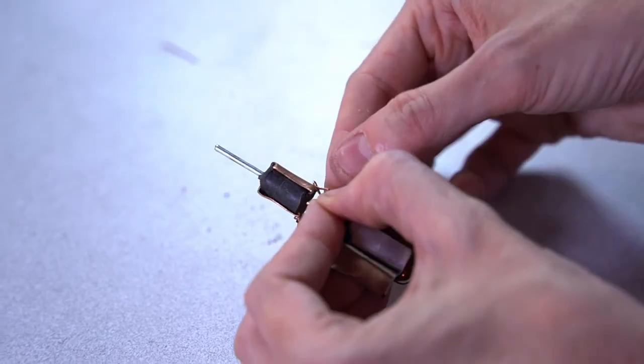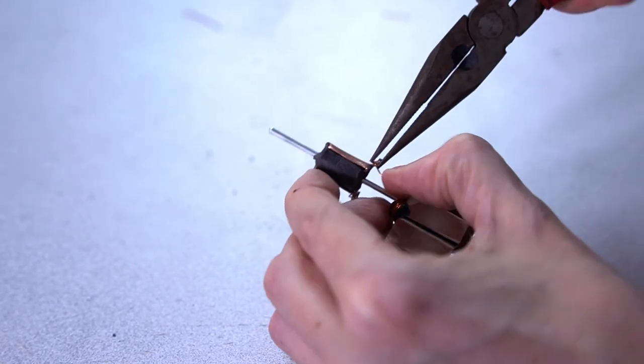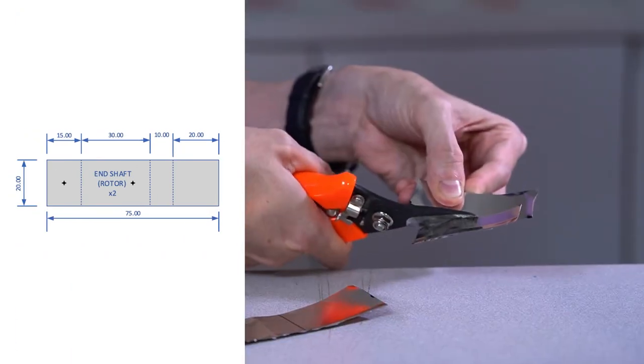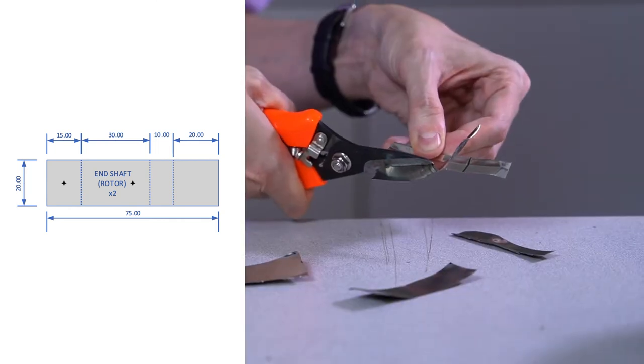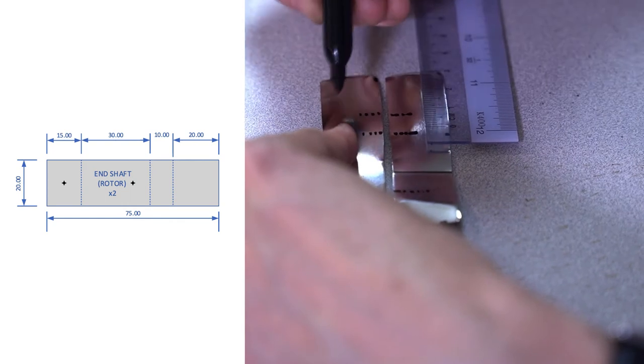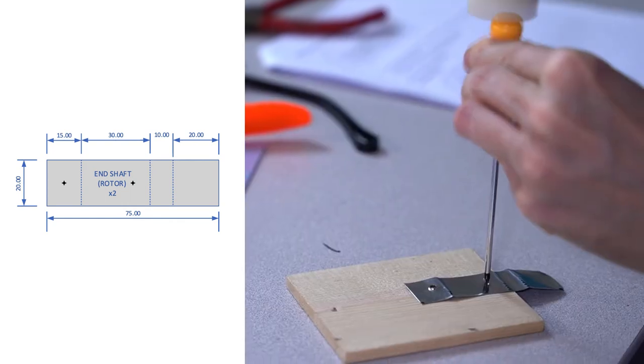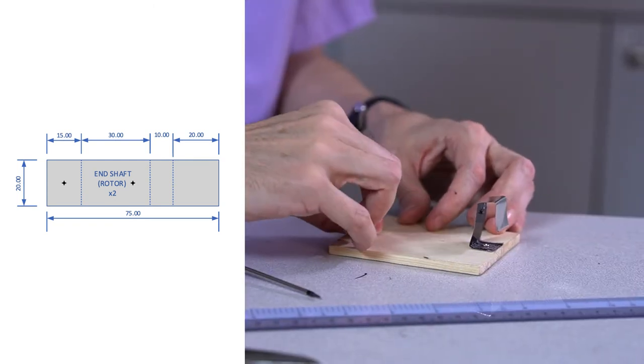Let's connect the other end of the wire to the commutator. To hold the shaft in place, we'll cut two steel pieces, 75 millimeters by 20 millimeters, and fold them with the pliers along the dotted lines. We'll punch holes where you see the black dots in the diagram and then screw them in place onto the wooden block.